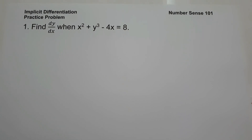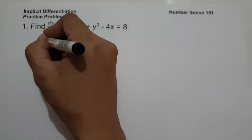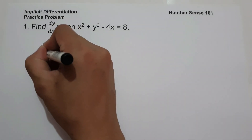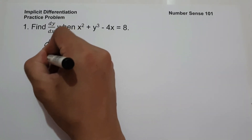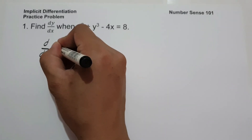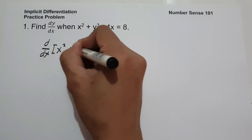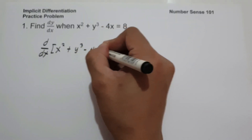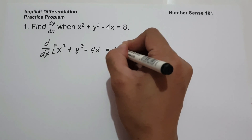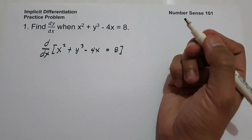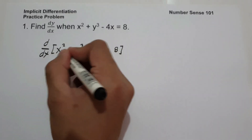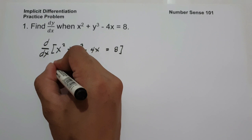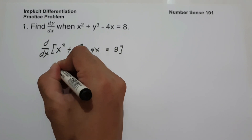The first step is to differentiate both sides of the equation. So we are going to have d over dx of x squared plus y cubed minus 4x equals 8. Let us find the derivative of x squared, and that is 2x.